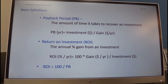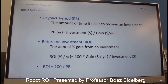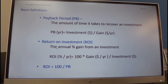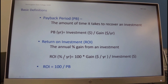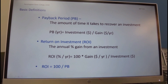The basic definition of payback period is the amount of time it takes to recover an investment. Payback measured in years equals investment in dollars divided by the gain from that investment in dollars per year. A return on investment, or ROI, is the annual percent of gain from the investment: ROI in percent per year equals 100 times the gain in dollars per year divided by the investment in dollars, yielding percent per year.